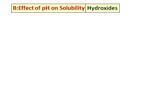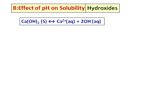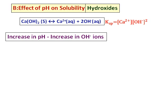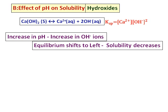Now let's do the second effect on solubility: pH. Consider calcium hydroxide, which ionizes into calcium ions and hydroxide ions — the Ksp is given. If I increase the pH, that means I am increasing the hydroxide ion concentration. Applying Le Chatelier's principle, increasing a product shifts the equilibrium towards the reactants, and therefore solubility will decrease.